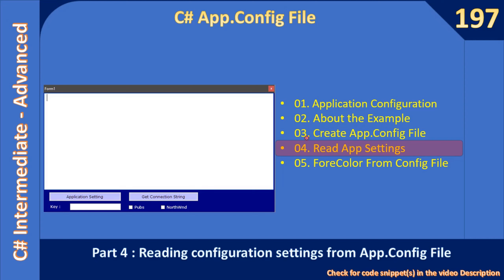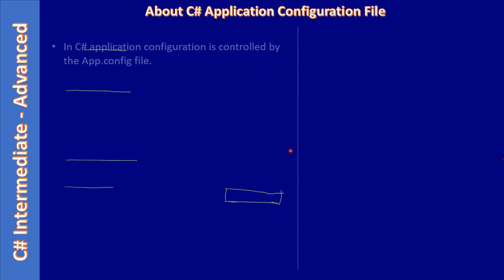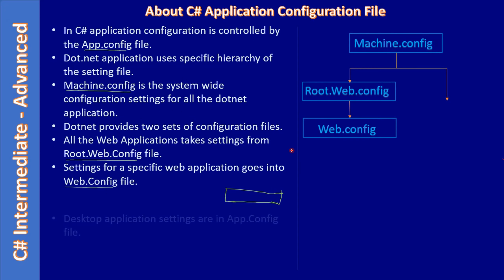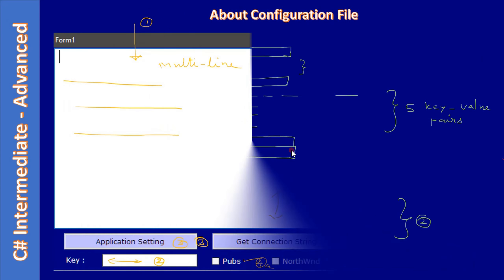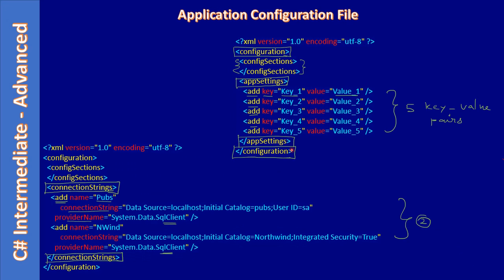When the builder deploys the exe, it will also deliver the config file with the name application.exe.config. Now we will go ahead and read the app settings. First we learned about the basics of application configuration, then we talked about the example. In the previous video we talked about the application configuration file sections like app settings and connection strings.